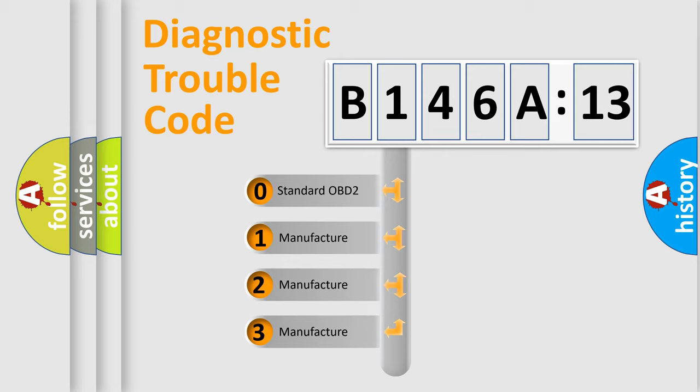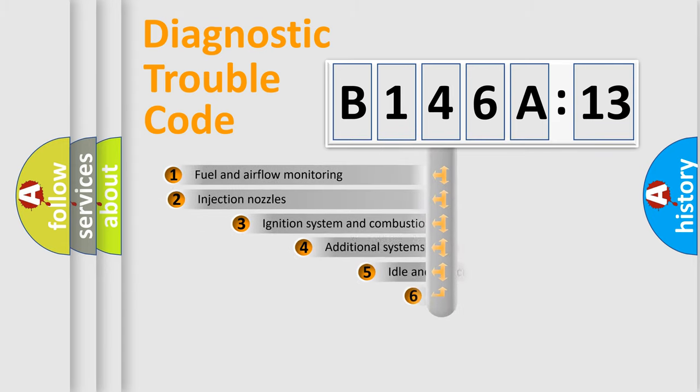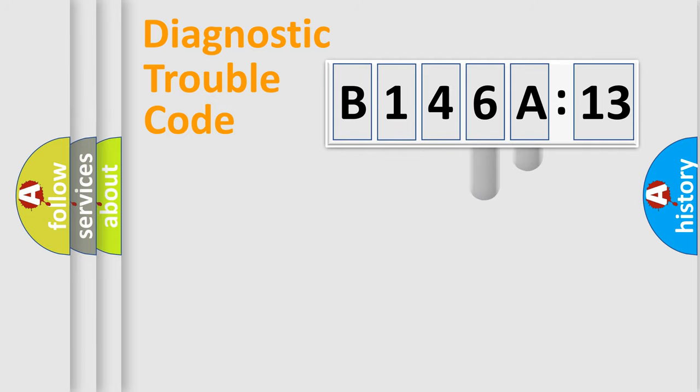If the second character is expressed as zero, it is a standardized error. In the case of numbers 1, 2, or 3, it is a more prestigious expression of the car-specific error. The third character specifies a subset of errors. The distribution shown is valid only for the standardized DTC code. Only the last two characters define the specific fault of the group.